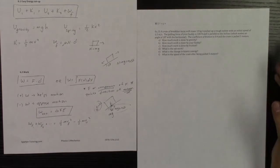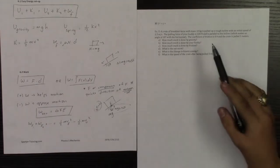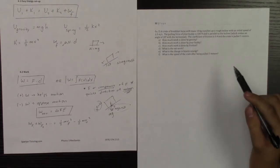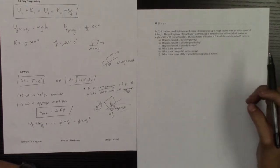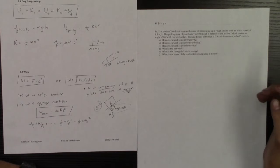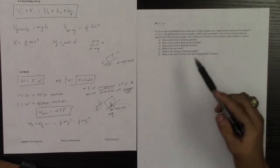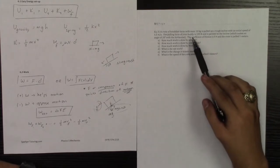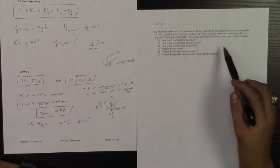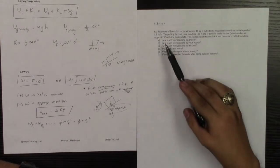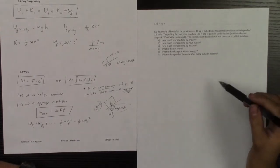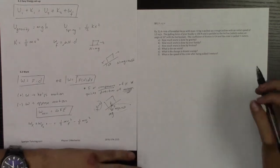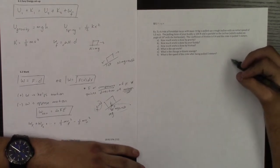Let's go ahead and take a look at this problem. We're going to be utilizing work. This problem says we have a crate of breakfast tacos with a mass of 10 kilograms, and it's pulled up a rough incline with an initial speed of 1.5 meters per second. The pulling force of your body is 100 newtons and is parallel to the incline which makes an angle of 20 degrees with the horizontal. The coefficient of friction is 0.4 and the crate is pulled 5 meters. So let's sketch out our situation.